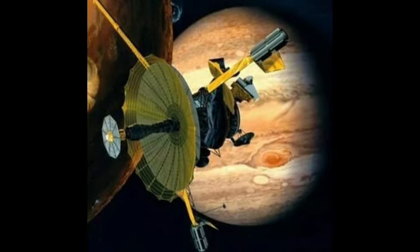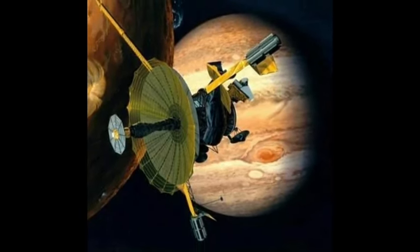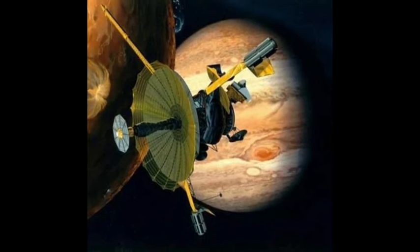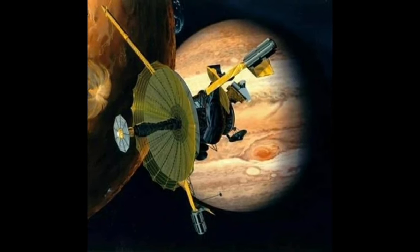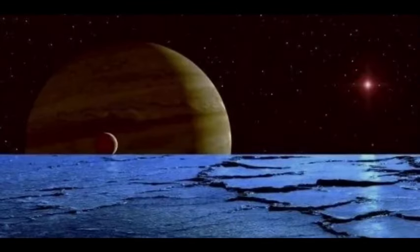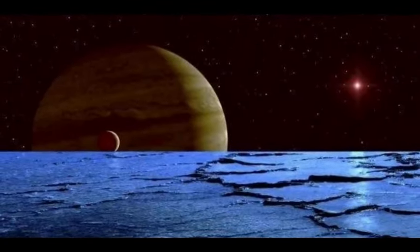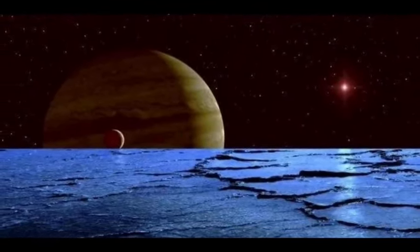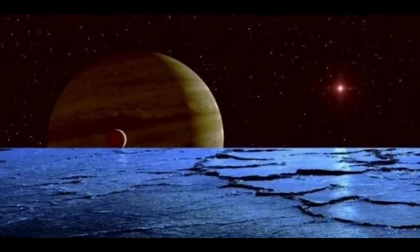Many spacecraft have passed through Europa during their missions, but it was NASA's Galileo spacecraft that took our understanding of this icy moon to a new level. It discovered the first hard evidence that there is a huge ocean beneath its surface, possibly containing two or three times more water than the entire Earth.